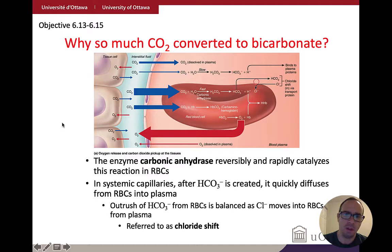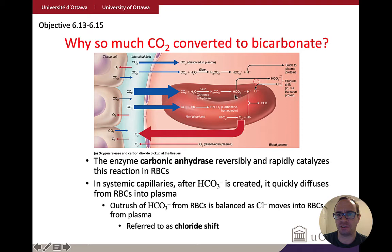We also talked about why so much carbon dioxide is converted to bicarbonate. Carbon dioxide enters cells where carbonic anhydrase combines it with water to form carbonic acid. When carbonic acid dissociates, it makes the bicarbonate ion. We shift the bicarbonate out of the cell and bring in chloride — what's called the chloride shift — and that's how we end up with so much bicarbonate stored within the blood plasma. At the lungs, this process happens in reverse, since this enzyme can work both ways.